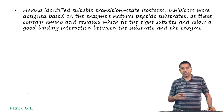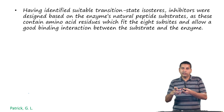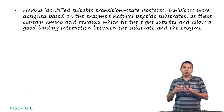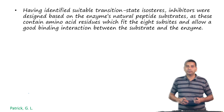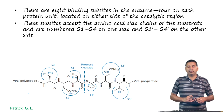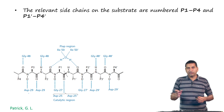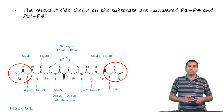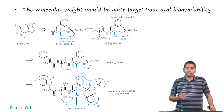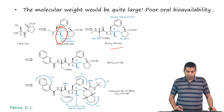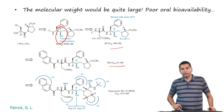Having identified suitable transition state isosteres, inhibitors were designed based on the enzyme's natural peptide substrates so that they can bind to HIV protease. Because they are inhibitors, there is no amide bond to cleave, so they bind to the enzyme and prevent further substrates from acting on it. There are eight binding subsites in the enzyme, numbered S1 to S4 and S1' to S4'. Using this concept, a number of inhibitors have been developed.